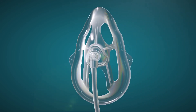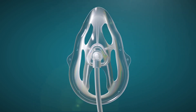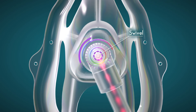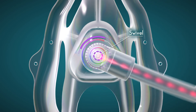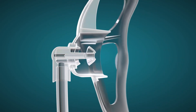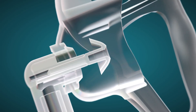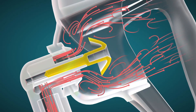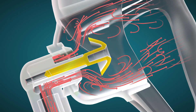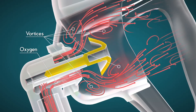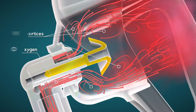Let's take a closer look at how this system works. Oxygen enters the system through a right-angled swivel at the front of the mask. The mushroom-shaped pin redirects the flow of oxygen, forming an organized pattern of vortices and a cloud of concentrated oxygen molecules.